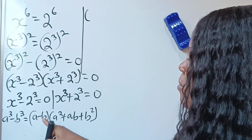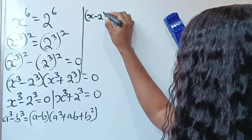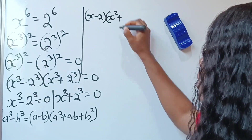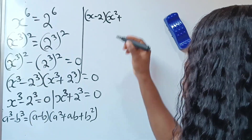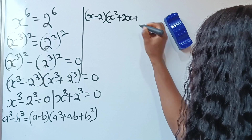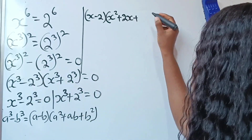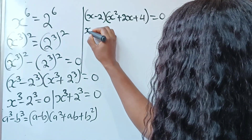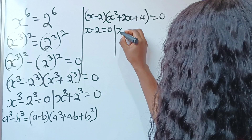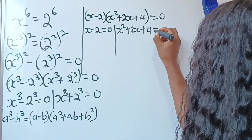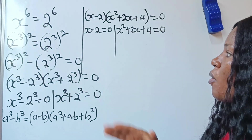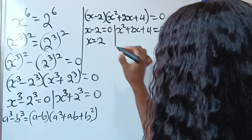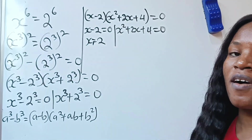So we write a minus b, that is x minus 2, multiplied by a squared — that is x squared — plus ab, that is 2 times x which is 2x, plus b squared, that is 2 squared which gives us 4. This equals 0. Then we write x minus 2 equals 0, and x squared plus 2x plus 4 equals 0. Solving the left side, we have x equals 2, and this is the first value of x.